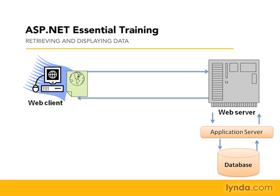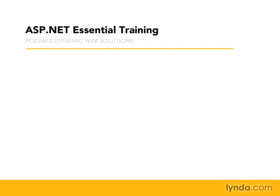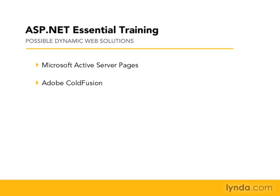There are many software packages you can select from as application servers. If you're watching this video series, you've probably already selected ASP.NET or you're evaluating it for possible use in your organization. Microsoft Active Server Pages, or ASP, is another option — an older version of Microsoft's application server technology. You can also select Adobe ColdFusion, a cross-operating system product that works on Windows, Mac, and Linux, and uses its own proprietary language, ColdFusion Markup Language.